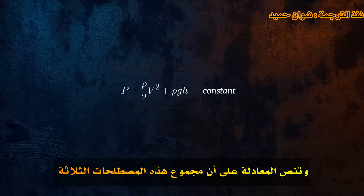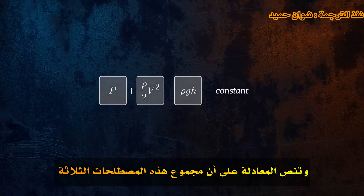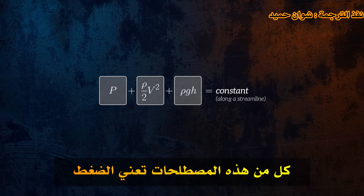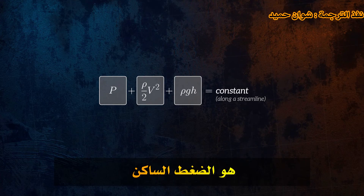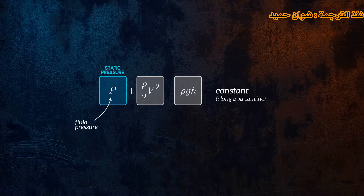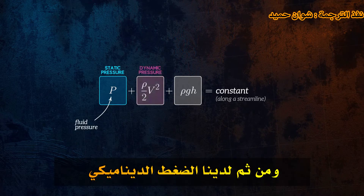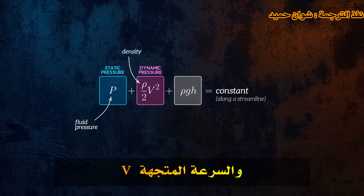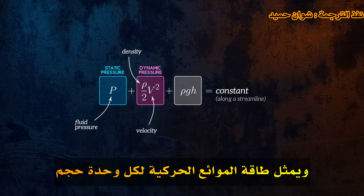The equation states that the sum of these three terms remains constant along a streamline. Each of the terms is a pressure. The first term is the static pressure, which is just the pressure, P, of the fluid. Then we have the dynamic pressure, which is a function of the fluid density, rho, and velocity, V, and represents the fluid kinetic energy per unit volume.